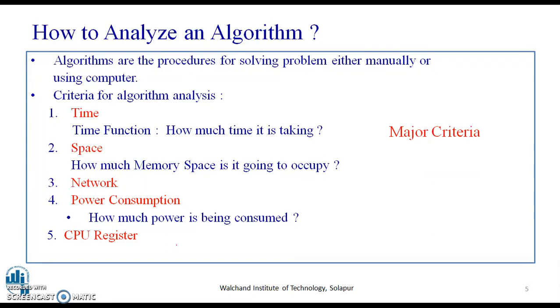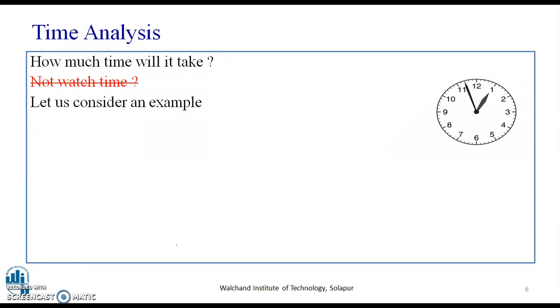We are going to consider the time function and the space function. Moving ahead, when we see how much time will it take, it is not the watch time. It is actually the time required for executing the algorithm. How do we do this? We do this by considering the same example of algorithm swap. When we say we are interested in finding out the time for this algorithm, it is not the watch time. It is the number of steps, number of unit of time.